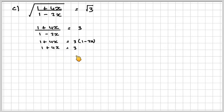So 1 plus 4x will be 3 minus 6x, and therefore 10x will be equal to 2. So x is equal to 0.2.